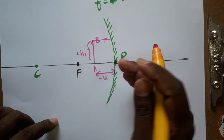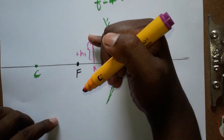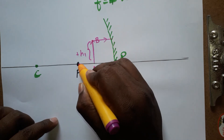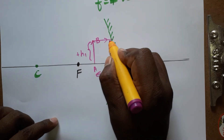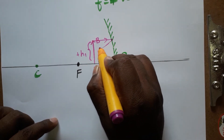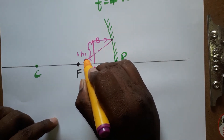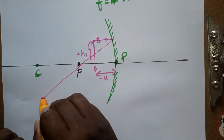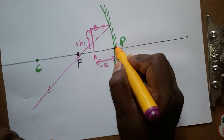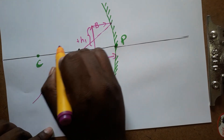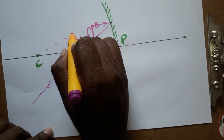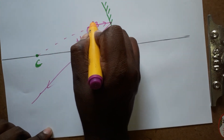When a ray is parallel to the principal axis, after reflection it will pass through the focus. This is the first rule used in ray diagram construction — a ray parallel to the principal axis reflects through the principal focus.